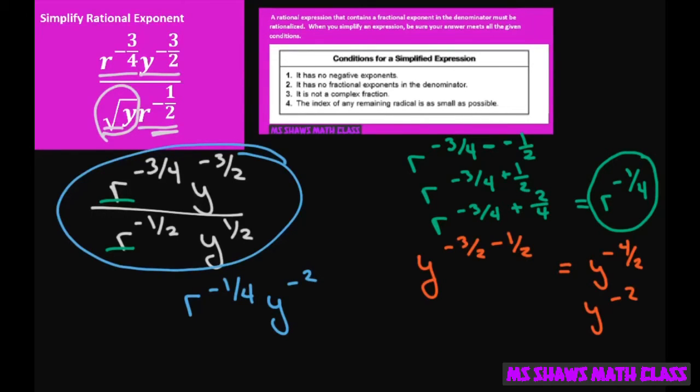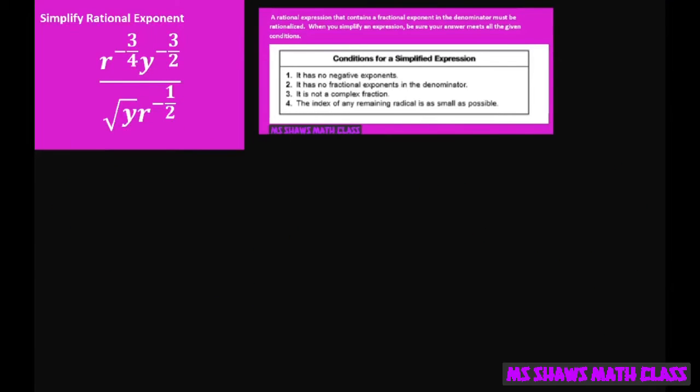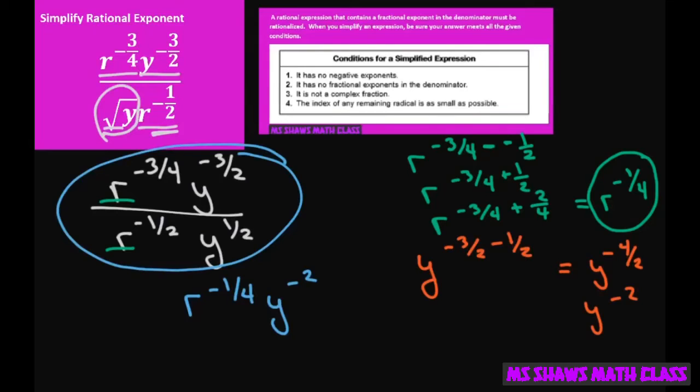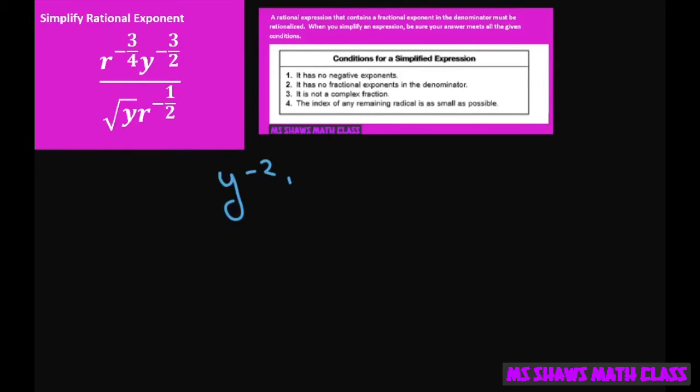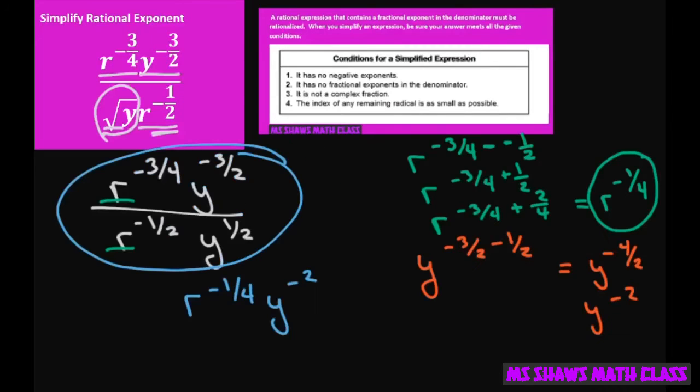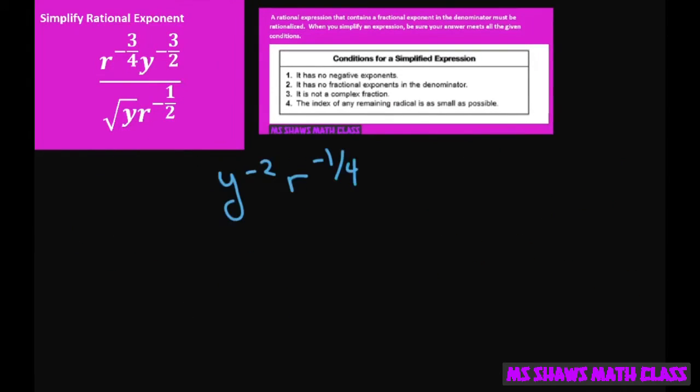Now I'm going to write that on the next slide. So y—I already forgot—y to the negative two, r to the negative one-fourth. Just double checking. All right, because I flipped it.